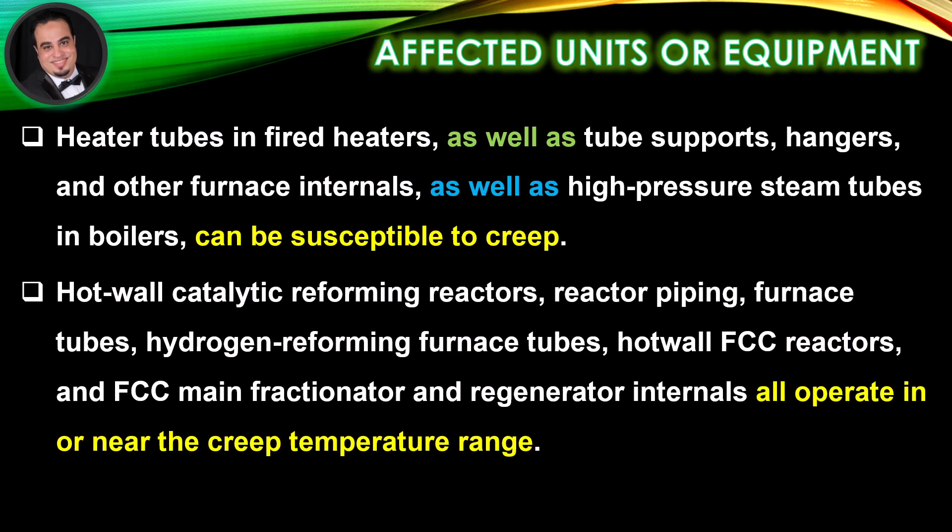Affected units or equipment: Creep damage is found in high temperature equipment operating in the creep temperature range, including heater tubes in fired heaters, tube supports, hangers, and other furnace internals, as well as high-pressure steam tubes in boilers. Hot wall catalytic reforming reactors, reactor piping, furnace tubes, hydrogen reforming furnace tubes, hot wall FCC reactors, FCC main fractionator, and regenerator internals all operate in or near the creep temperature range.